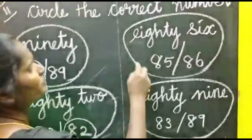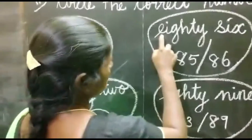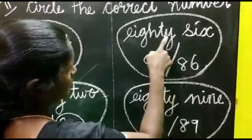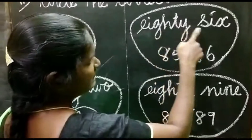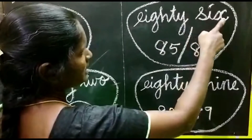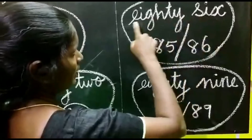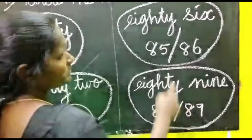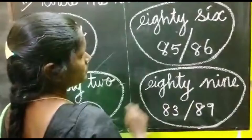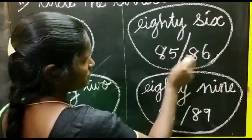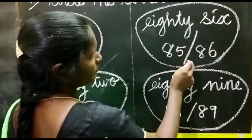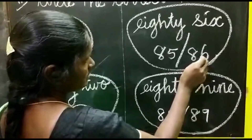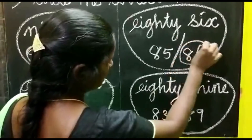The next one. E-I-G-H-T-Y. 86. S-I-X. 86. Okay. Here, 85 and 86 are given. Two numbers are given. Which one is the correct spelling for these two numbers? 86. So, 86 is the answer. Circle the 86.